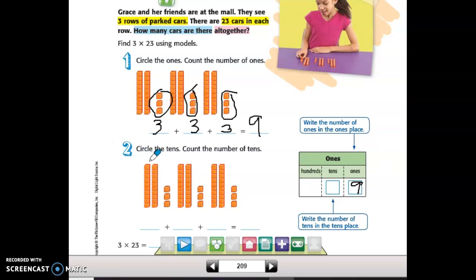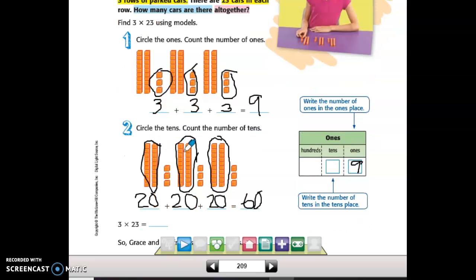And step two, circle the tens. So I circled the tens for each set. And I have 20 in each set. 20, 40, 60. So my total is 60.